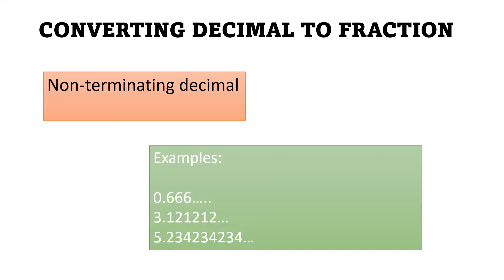Now, what if our decimal is a non-terminating decimal? For example, 0.666..., 3.121212121212... and so on and so forth, and 5.234234234... These are the kinds of non-terminating decimals.